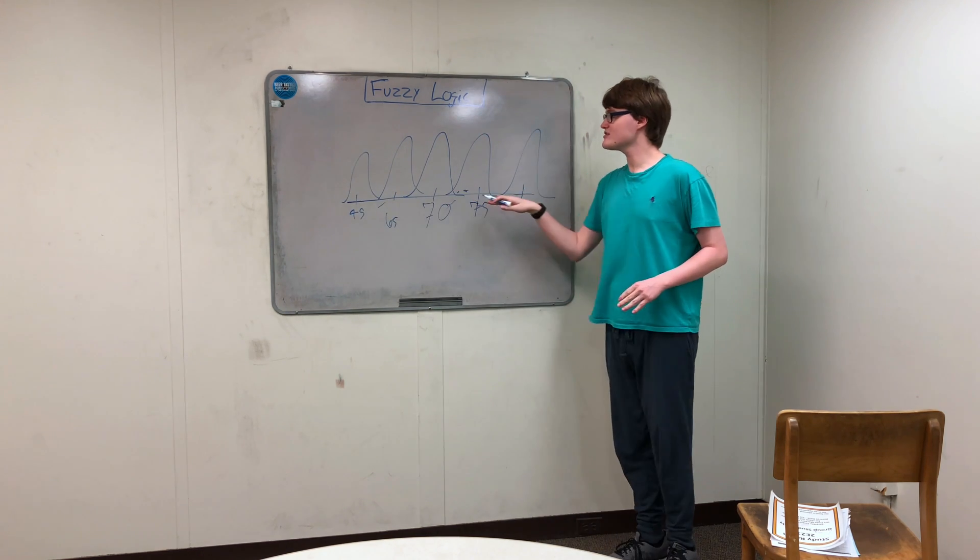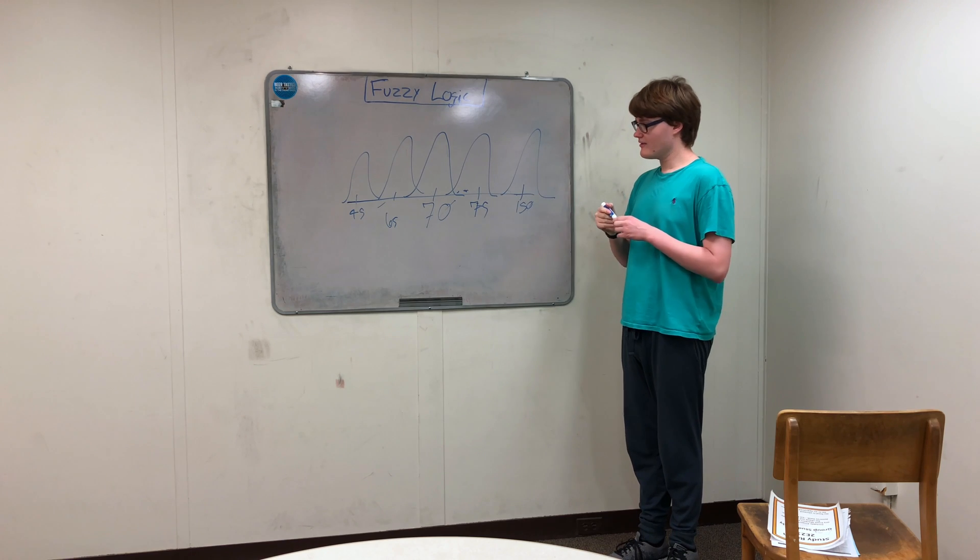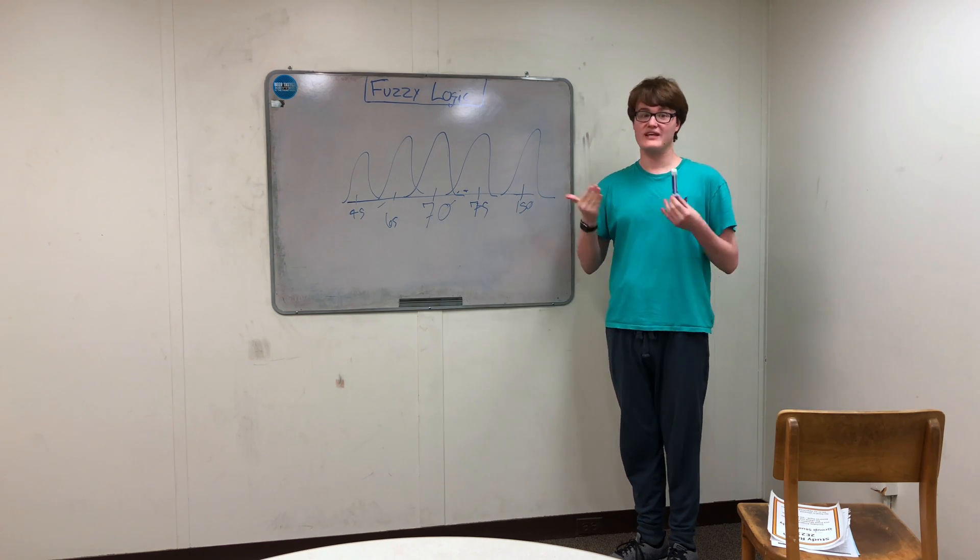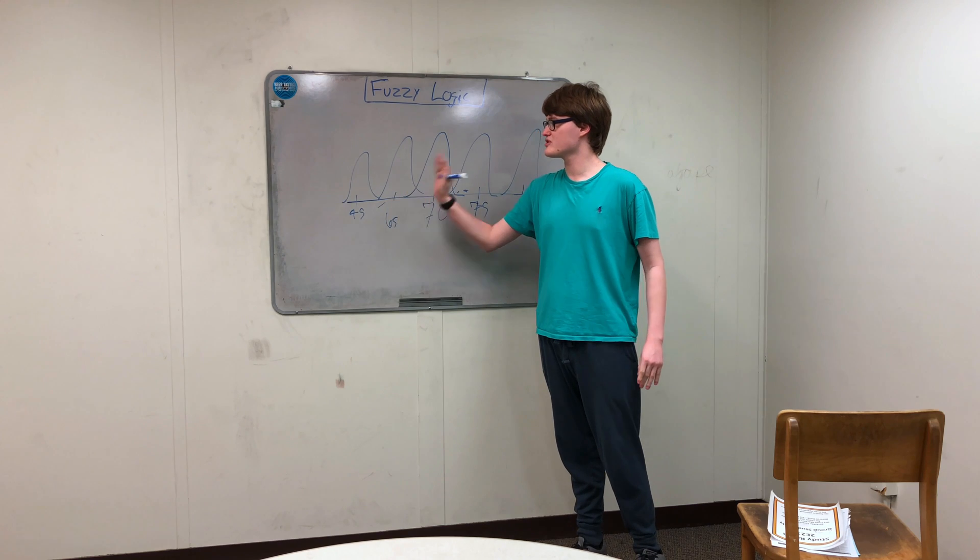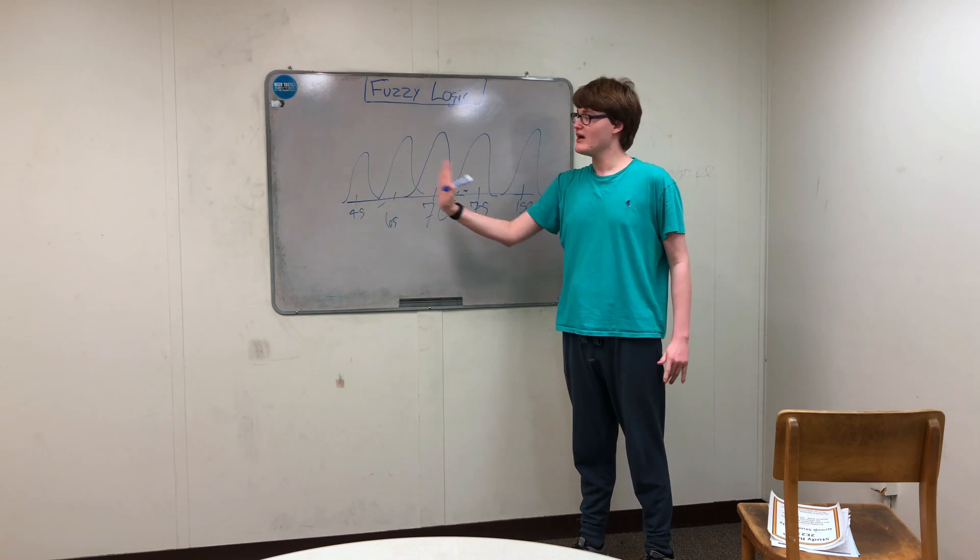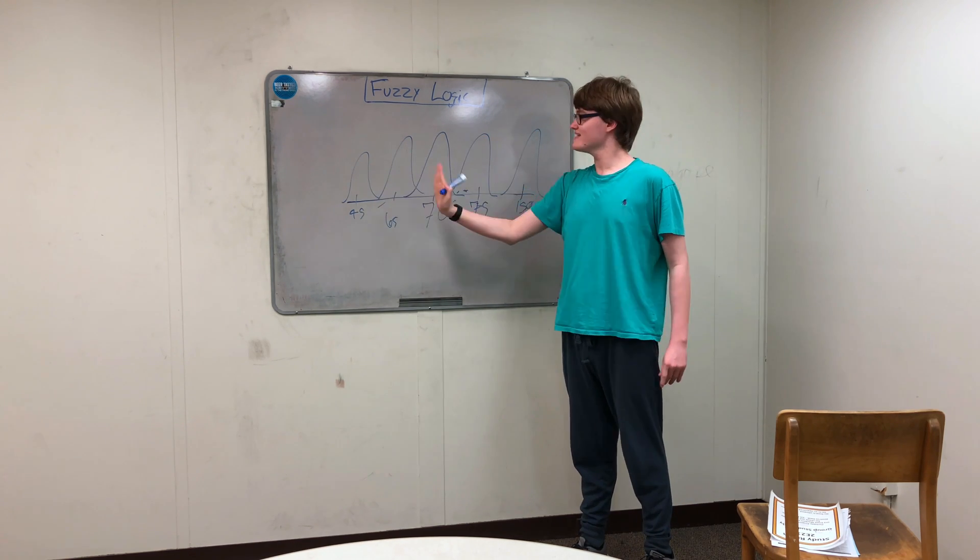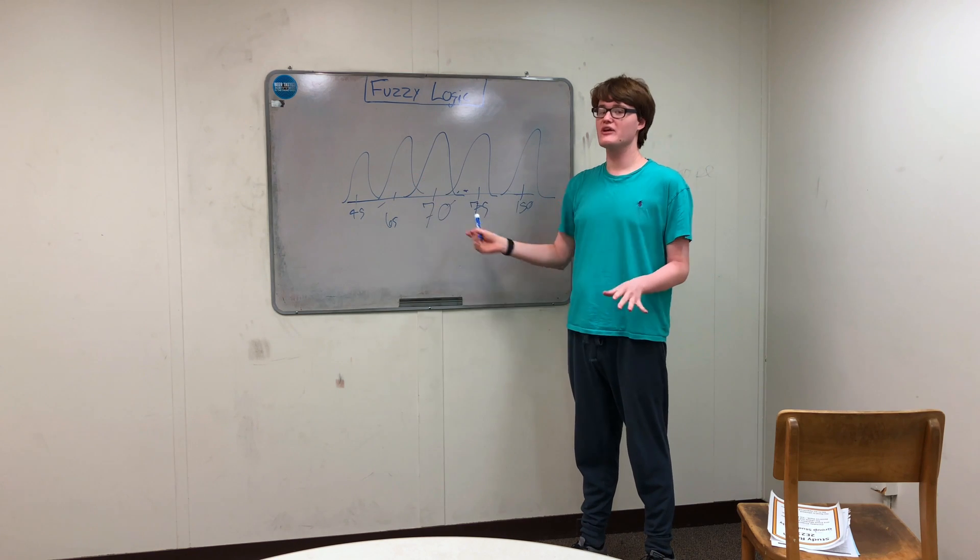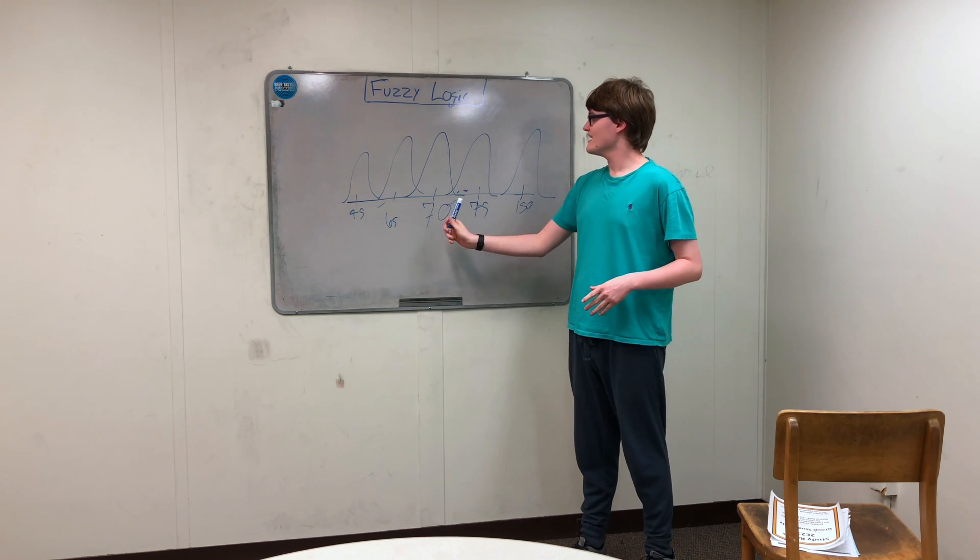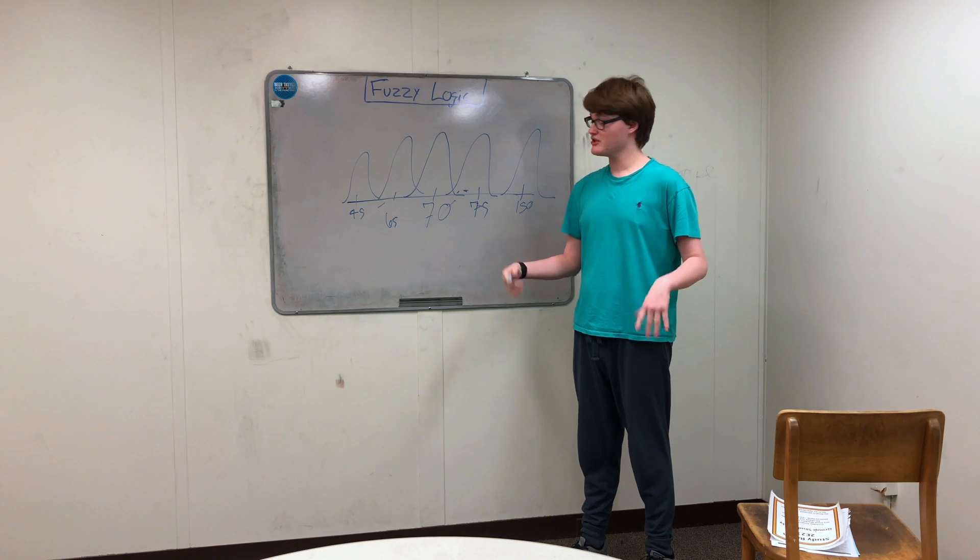And so as you fit on this continuum here, there are multiple different ways you can interact with a gas and brake. Like, for instance, if you're at 45 miles per hour or just way too slow, then you hit the gas a lot. If you're kind of slow, you hit the gas a little bit. And if you're 70 miles per hour, you don't have to do anything. You're doing good.